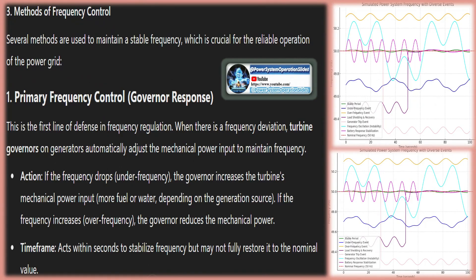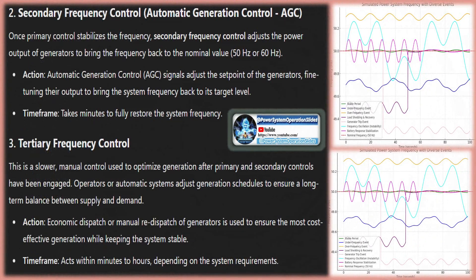Changes in supply and demand impact frequency — excess demand drops the frequency, while excess supply raises it. We are required to keep the frequency within 0.5 Hertz of 50 Hertz, but we aim for a tighter operational target of 0.2 Hertz. The trend in system frequency is a measure of mismatch between demand and generation, and so is a necessary parameter for load control in interconnected systems.